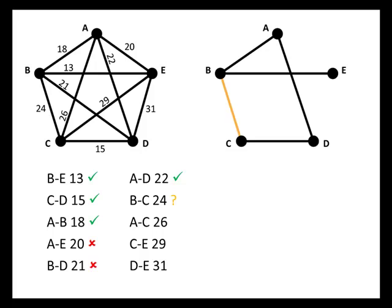Next we consider the edge from B to C. This actually causes both problems — it gives us a circuit containing A, B, C, and D but not E, and it also gives us three edges that all meet at B. So that edge is bad for multiple reasons and we cross it off. Next we consider A to C — again we see a problem: a circuit containing A, C, and D but not B or E, and three edges meeting at A. So we cross that one off as well.